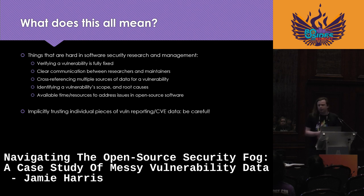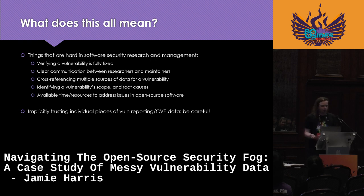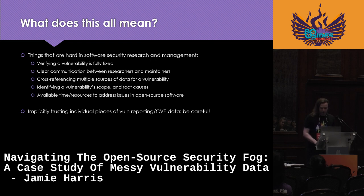From a user side, it shows very well that when these things that are hard about software security research and management aren't handled as well as they could be, implicitly trusting any individual piece of data about a vulnerability being reported — or even CVE data — you have to be careful. Not all of this stuff got CVEs, so if you're only looking at CVE data you wouldn't have a complete picture of what happened with the vulnerability. So it's hard to implicitly trust any one piece of data — you have to be careful about that.